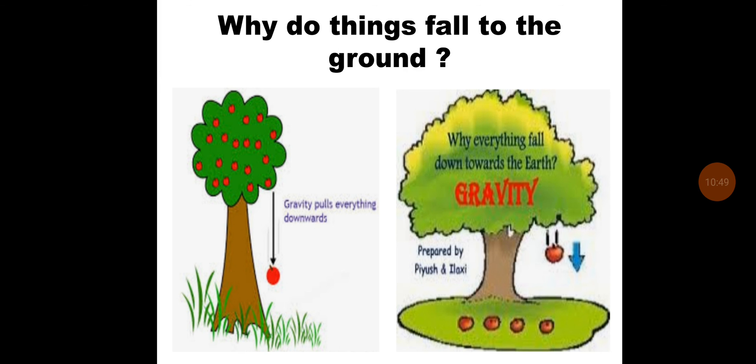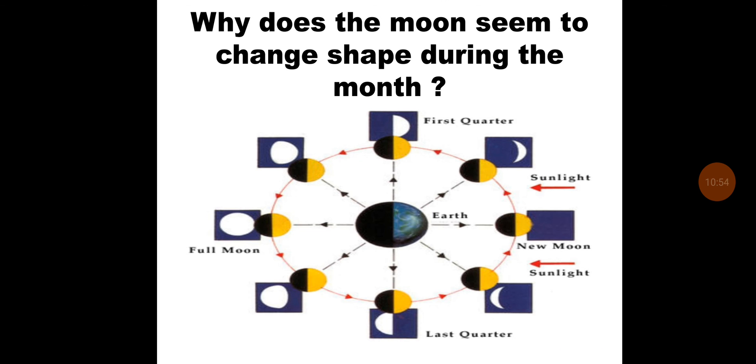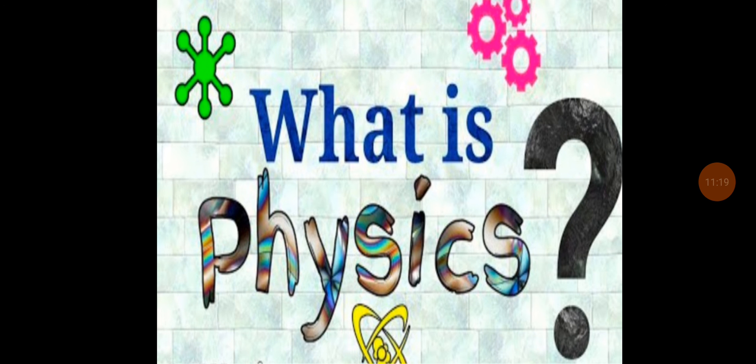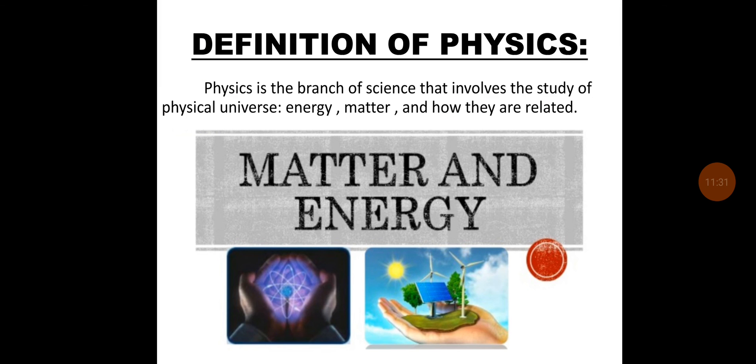Why do things fall to the ground? Why does the moon seem to change the shape during the month? What goes inside the sun to make it hot? Physics is that science which gives the answer of all these questions. All of these phenomena in the universe involve the study of matter and energy. What is physics? We can define it as: Physics is the branch of science that involves the study of physical universe, energy, matter and how they are related. Shortly, physics is the study of matter and energy and their mutual relationship.